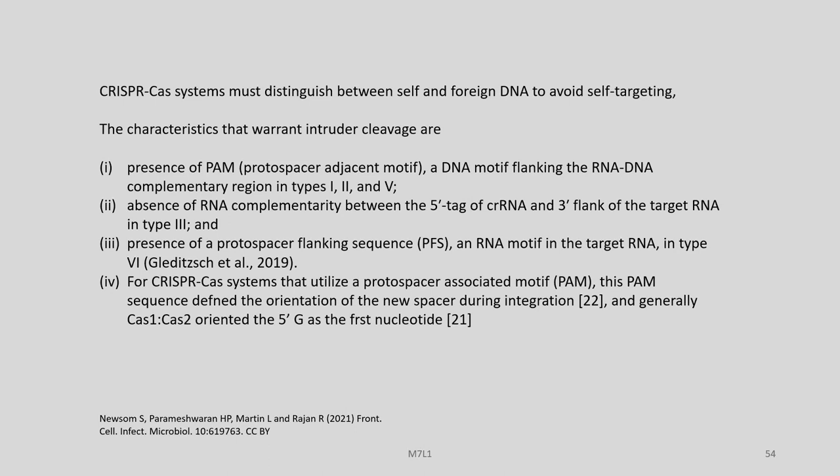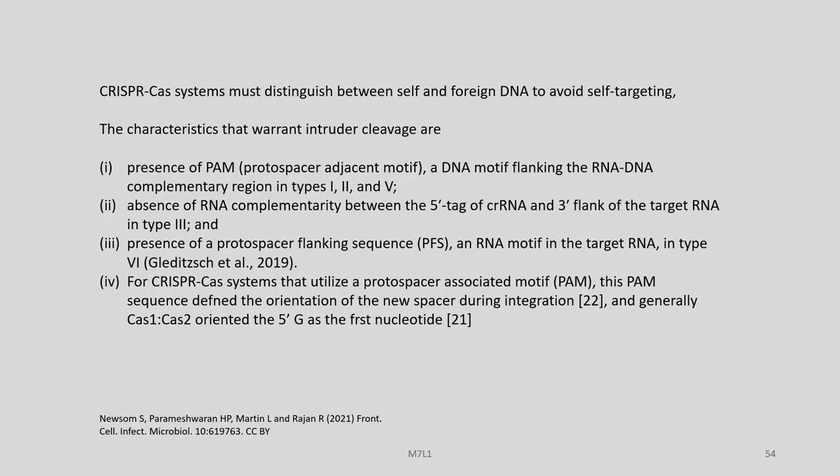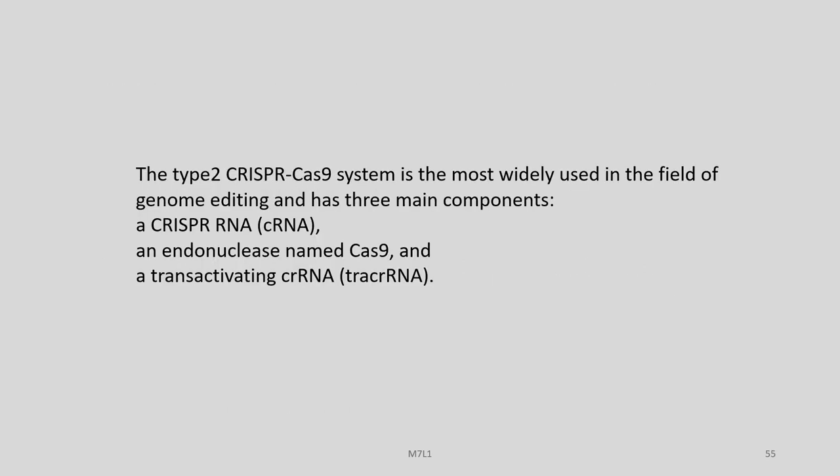The CRISPR-Cas systems must distinguish between self and foreign DNA to avoid self-targeting. The characteristics that warrant intruder cleavage are: presence of PAM, a DNA motif flanking the RNA-DNA complementary region in types I, II and V; absence of RNA complementarity between the 5-prime tag of crRNA and the 3-prime flank of the target RNA in type III; and presence of a protospacer flanking sequence (PFS), an RNA motif in the target RNA in type VI. For CRISPR-Cas systems that utilize a PAM, this sequence defines the orientation of the new spacer during integration, and generally Cas1 and Cas2 orient the 5-prime G as the first nucleotide.